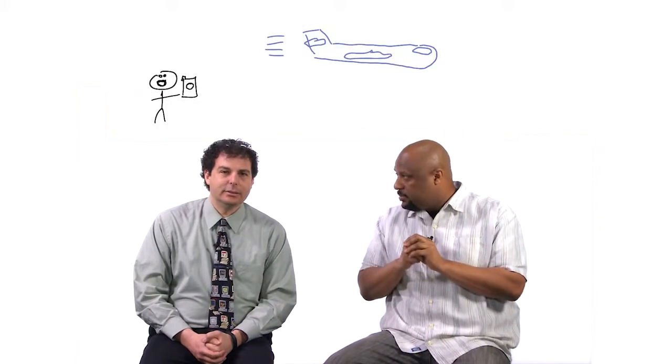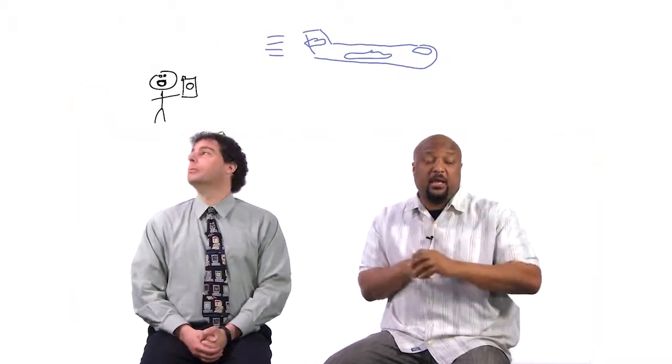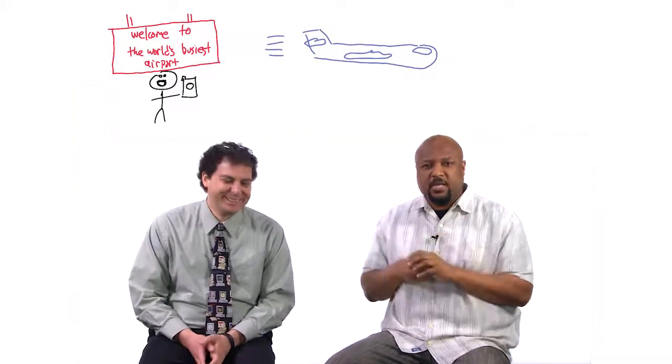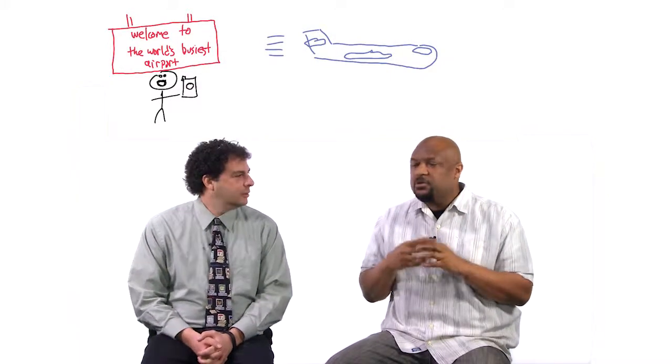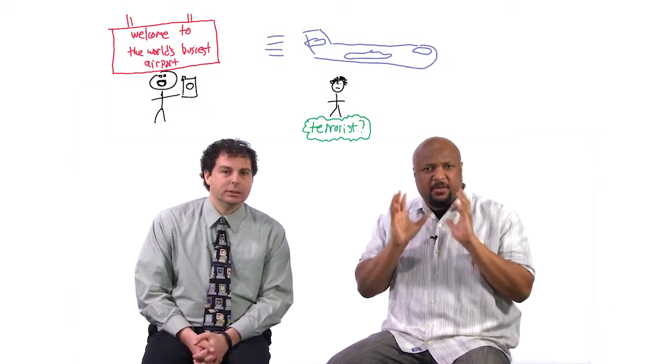So here's my favorite example. Imagine you have a camera, and let's say that it's in an airport, like we are now. And people are going through constantly. In fact, you're in Atlanta Airport, which is the world's busiest airport. And the camera's constantly taking pictures of you. And we're trying to find terrorists. So we're taking pictures of people and of their faces, say, and maybe what they're wearing. And we just want to label which ones are terrorists and which ones aren't.